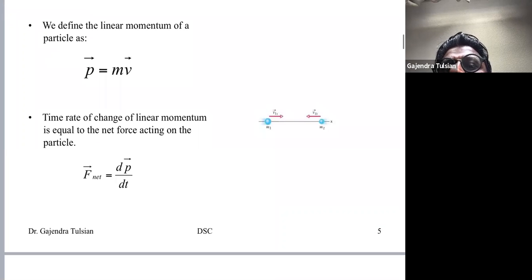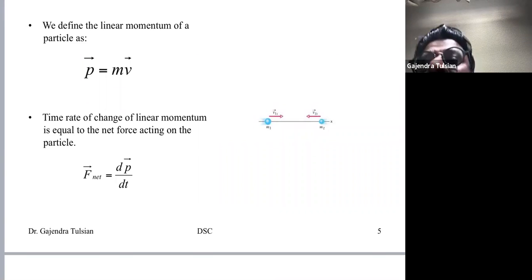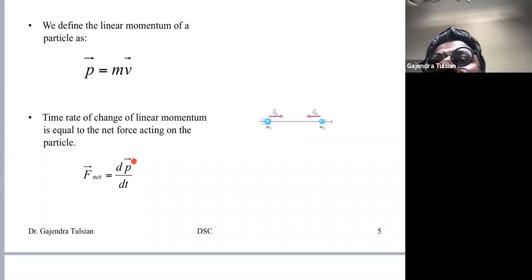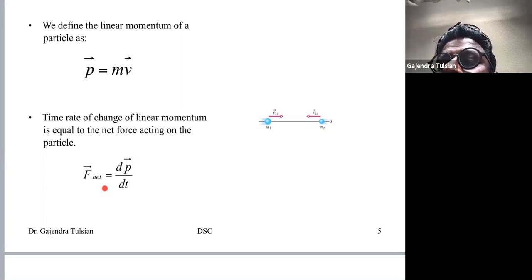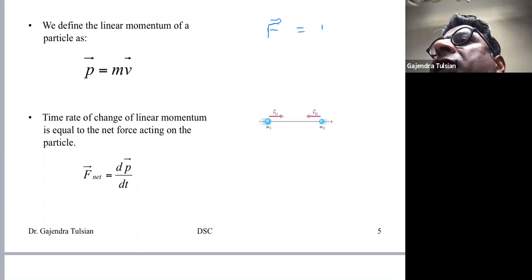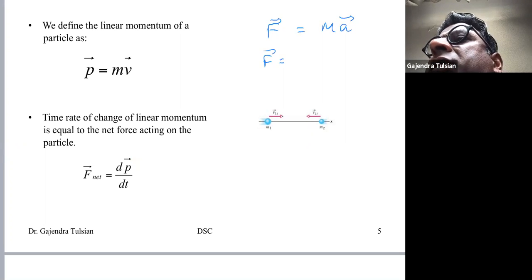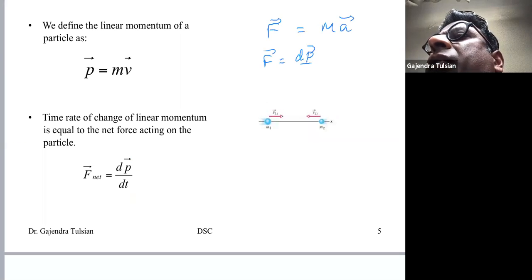Newton's second law is often written as force equals mass times acceleration, but it turns out that's not the most general form. Newton really defined force as the rate of change of momentum — F equals dP/dt. That is the most general form of Newton's second law.